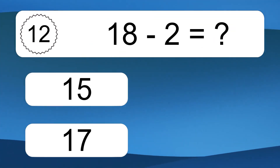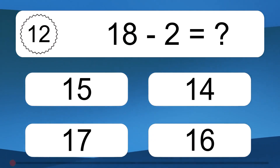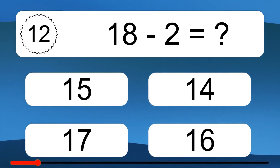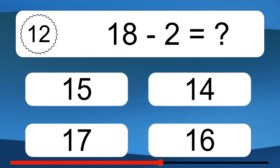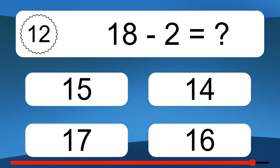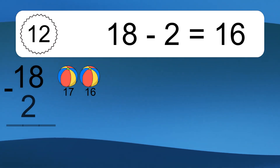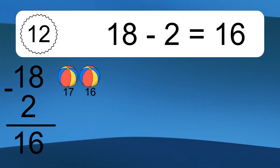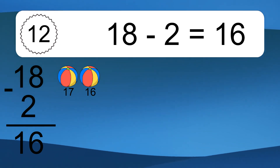18 minus 2 equals what? 18 minus 2 equals 16. Let's count it: 17, 16.